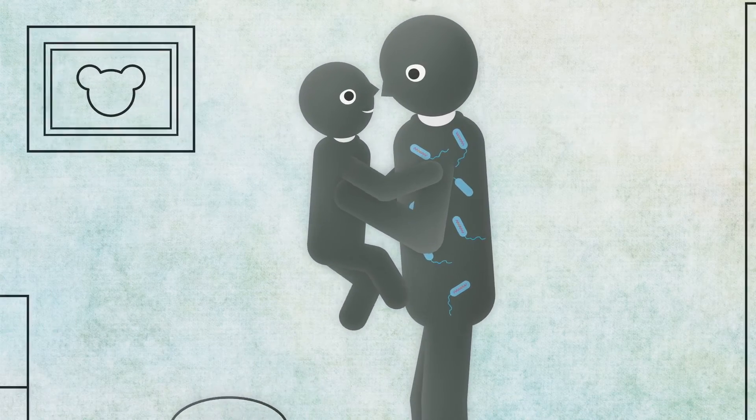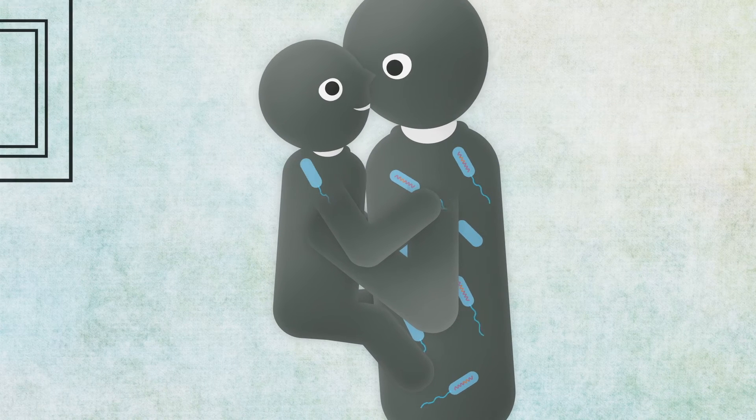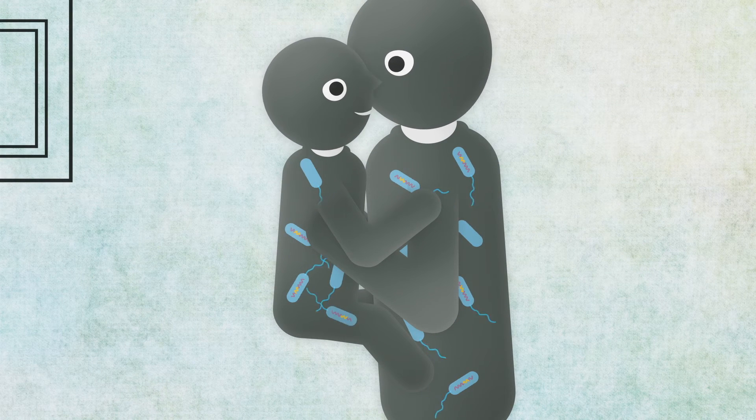A person infected with resistant bacteria can transmit them, and therefore the resistant gene, to people around them.